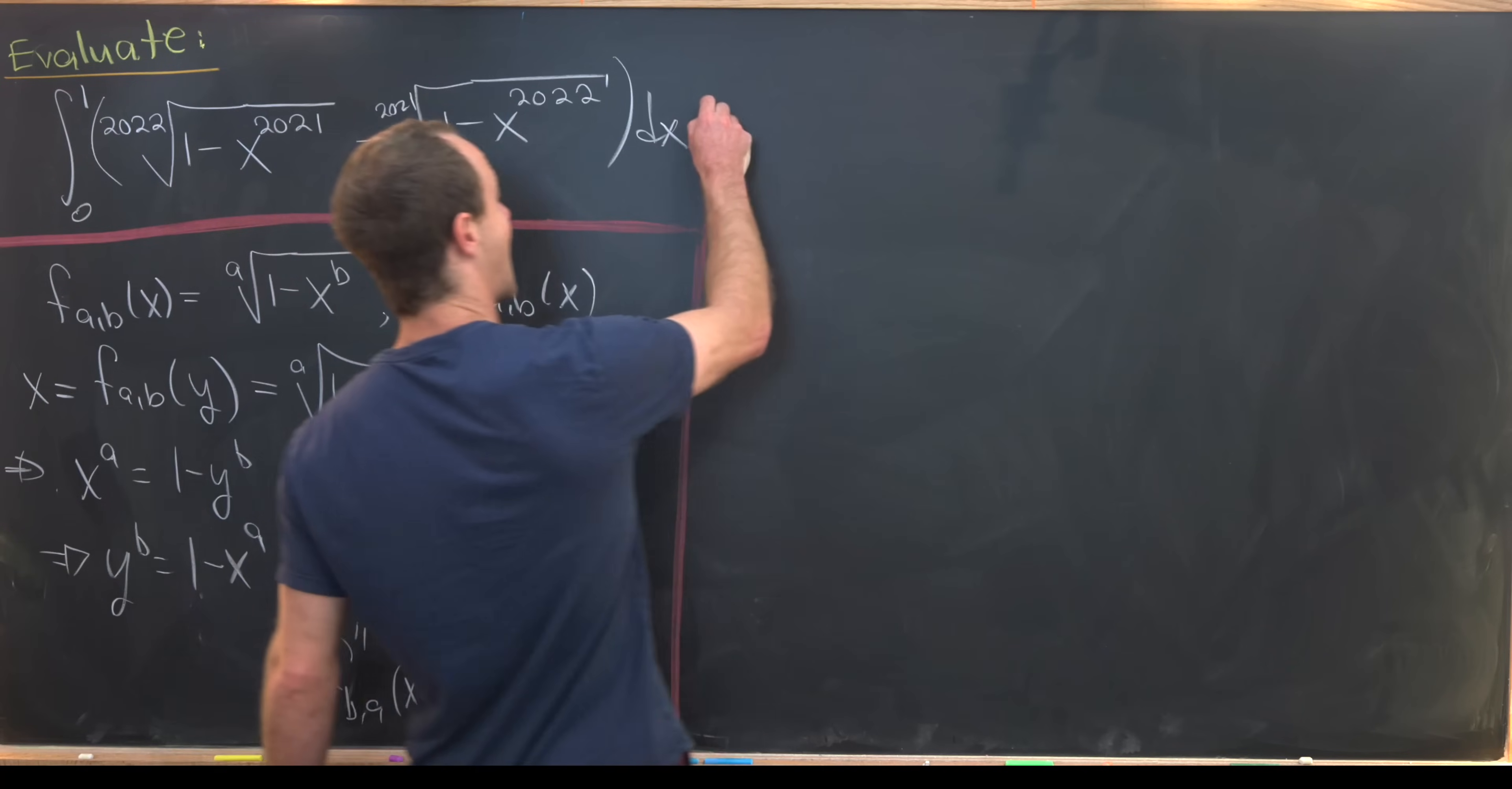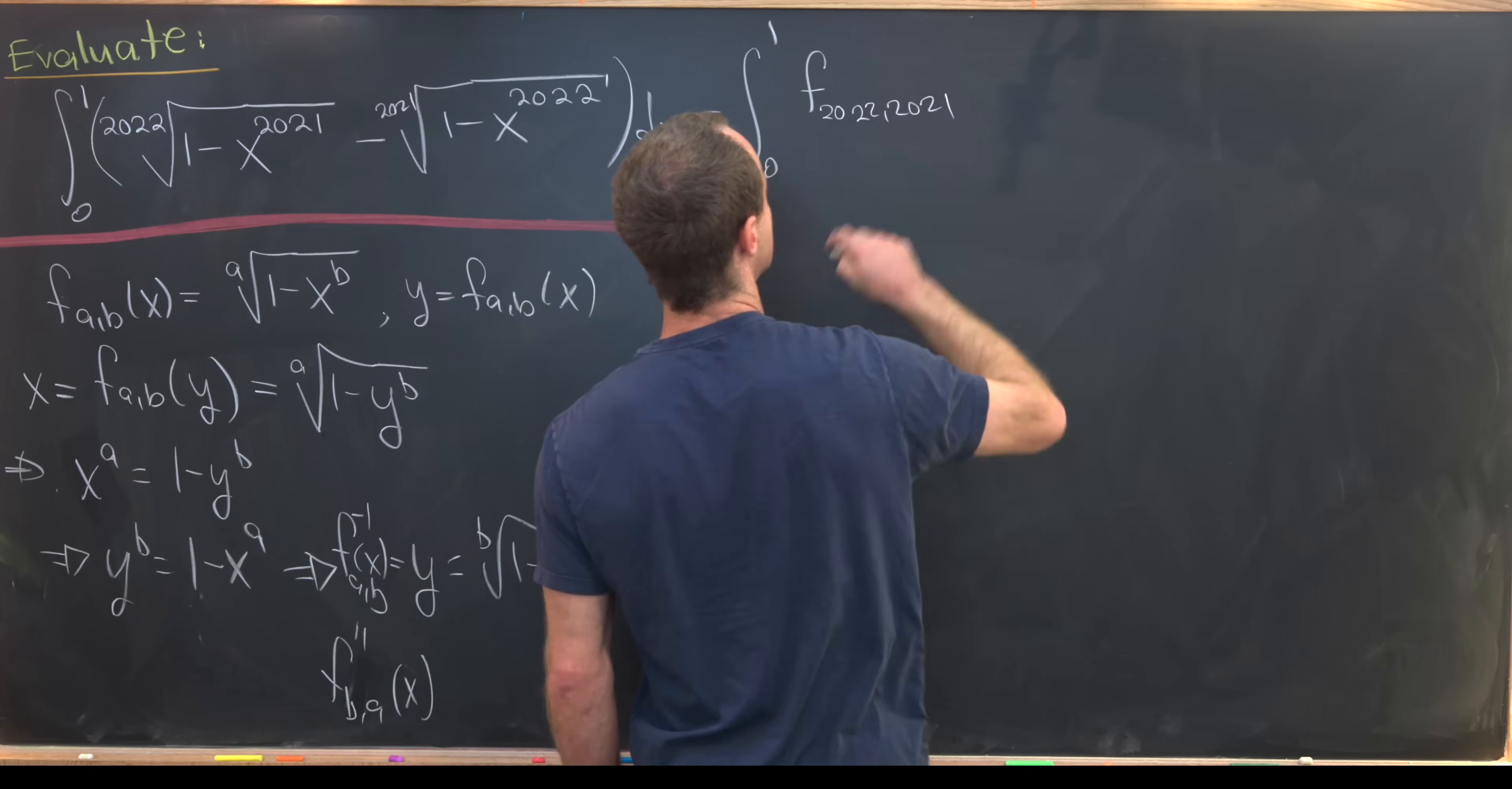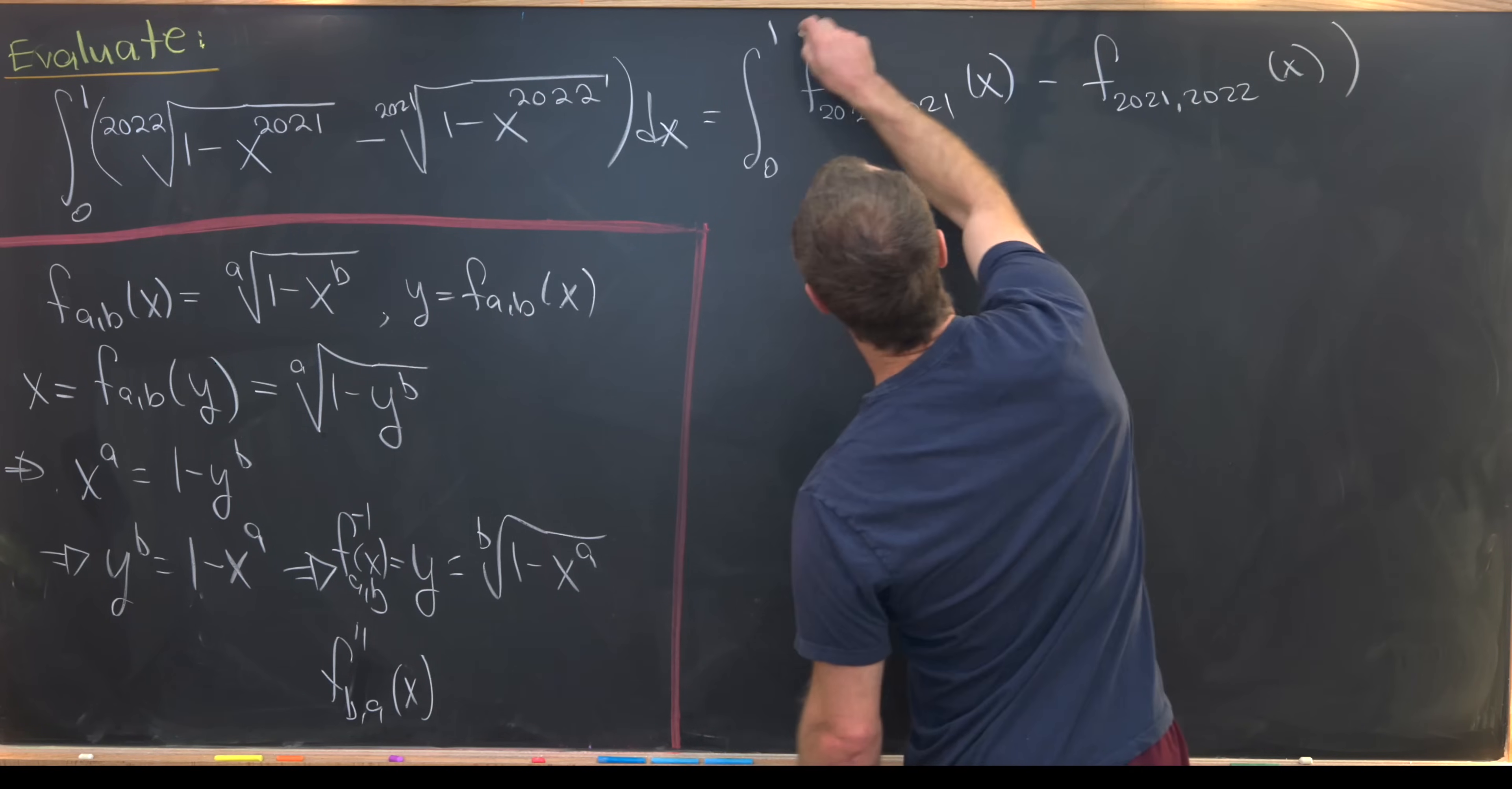That means that in our language up here, we have the integral from 0 to 1 of f sub 2022 comma 2021 of x minus f sub 2021, 2022 of x dx.